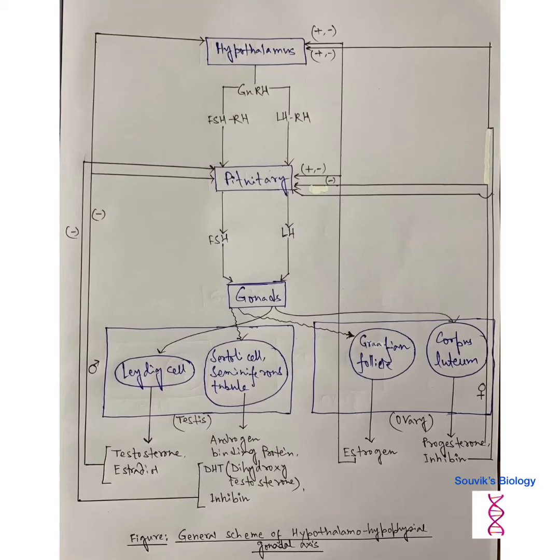In males, testis: Leydig cells secrete testosterone and estradiol. Sertoli cells and seminiferous tubules secrete ABP or androgen binding protein, inhibin, and dihydrotestosterone or DHT.